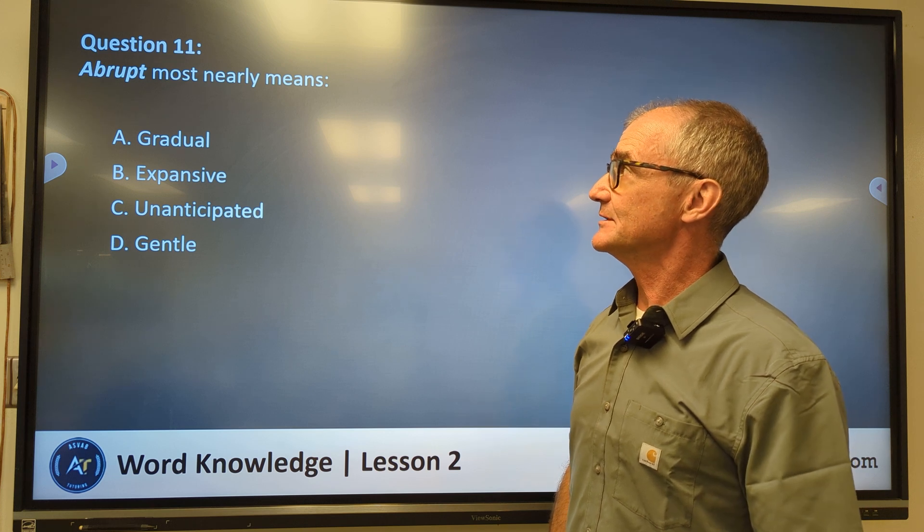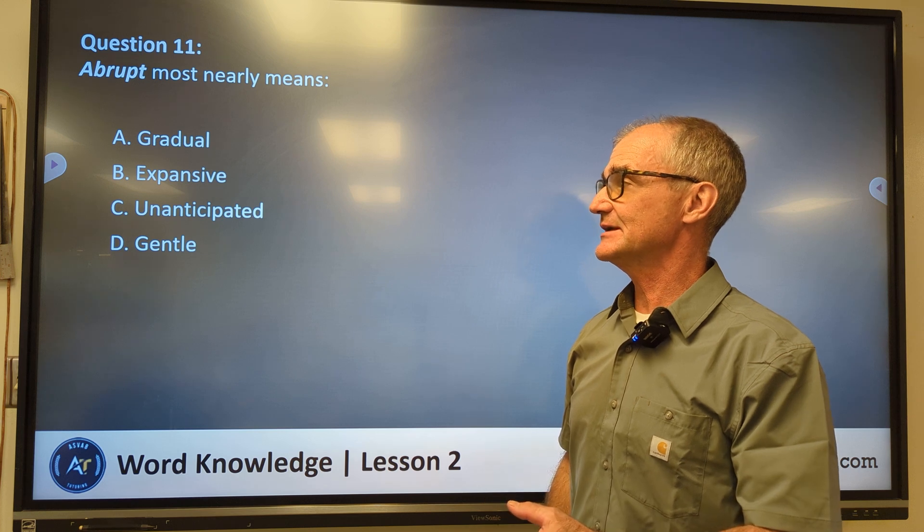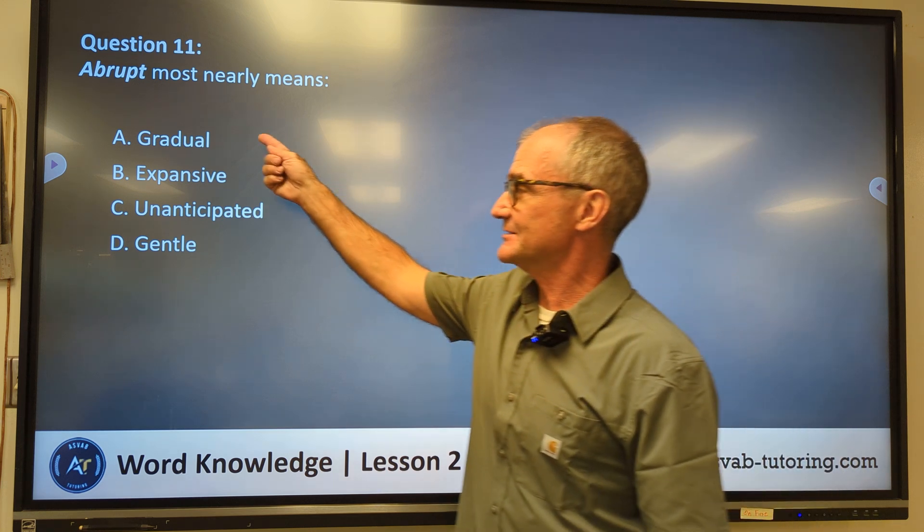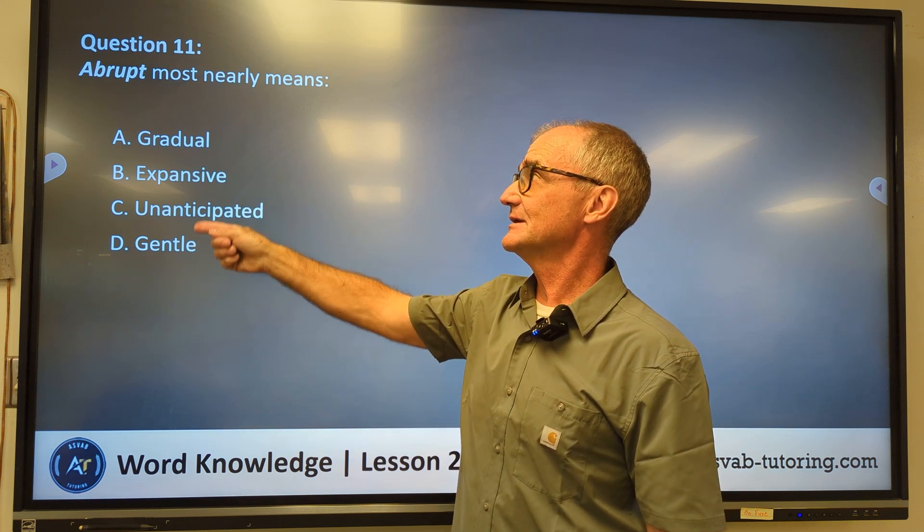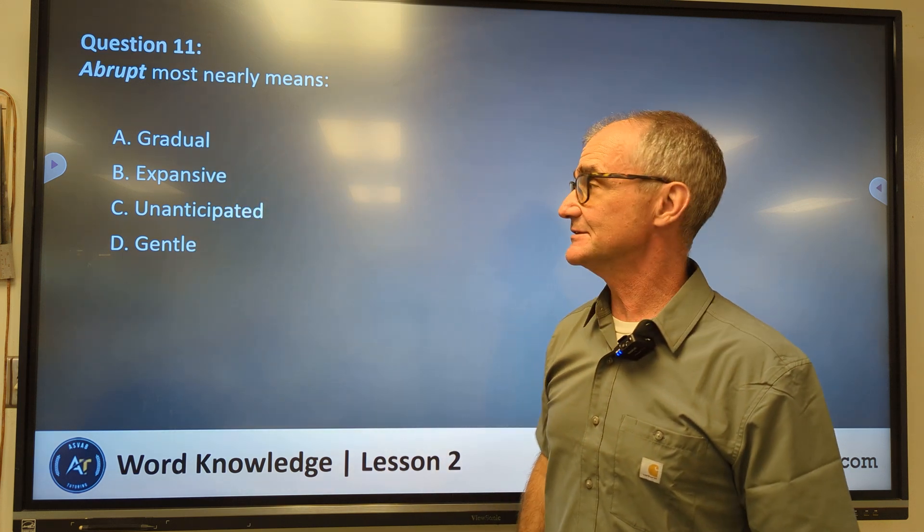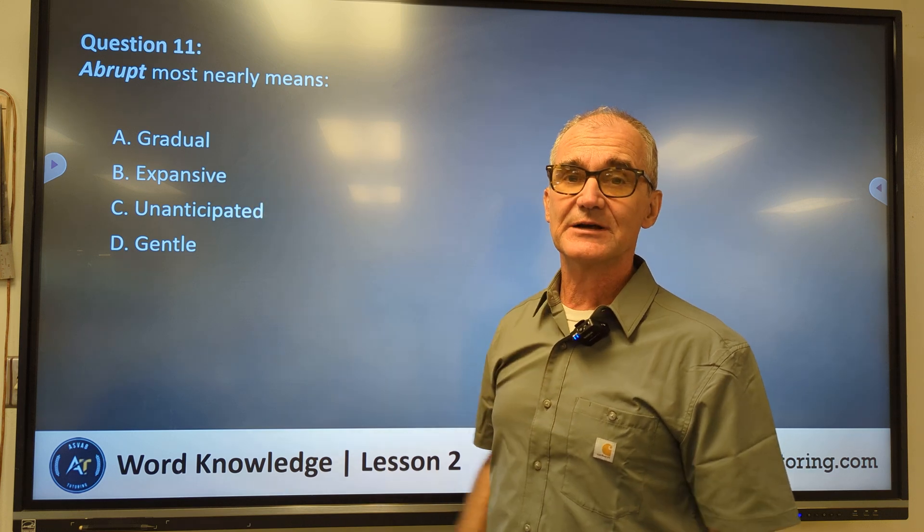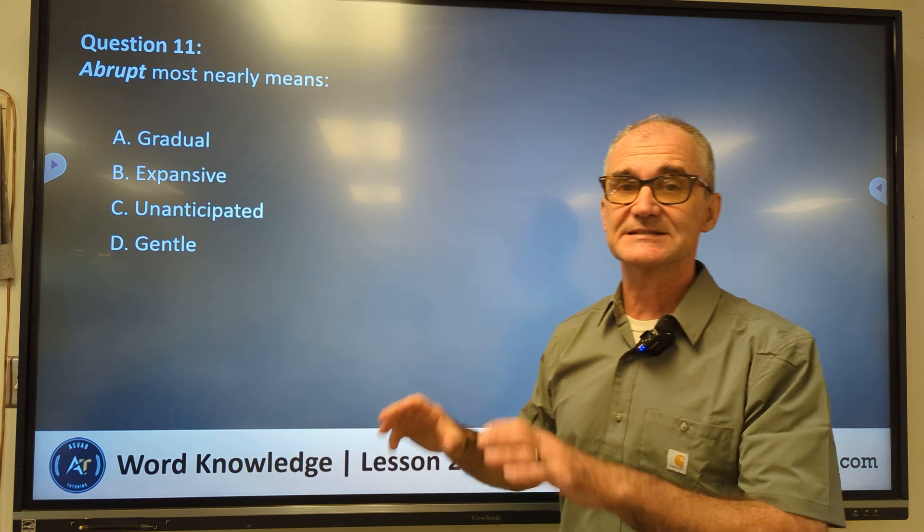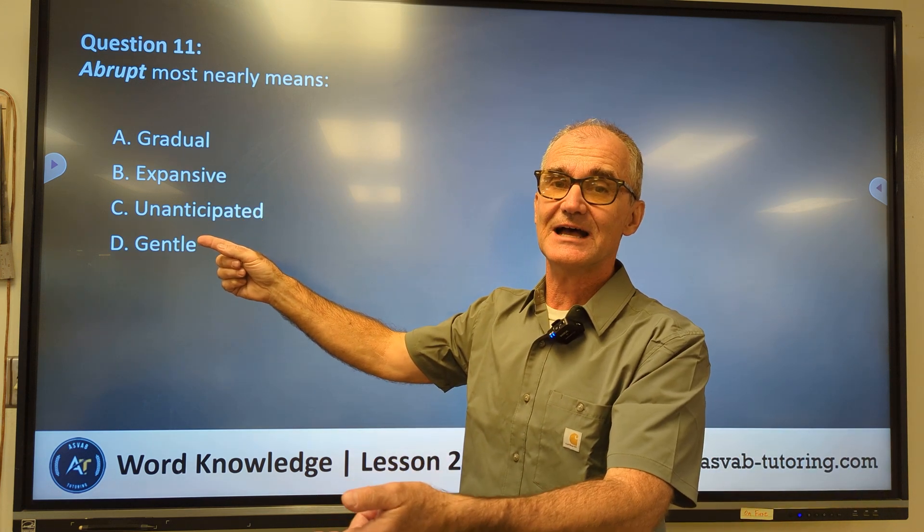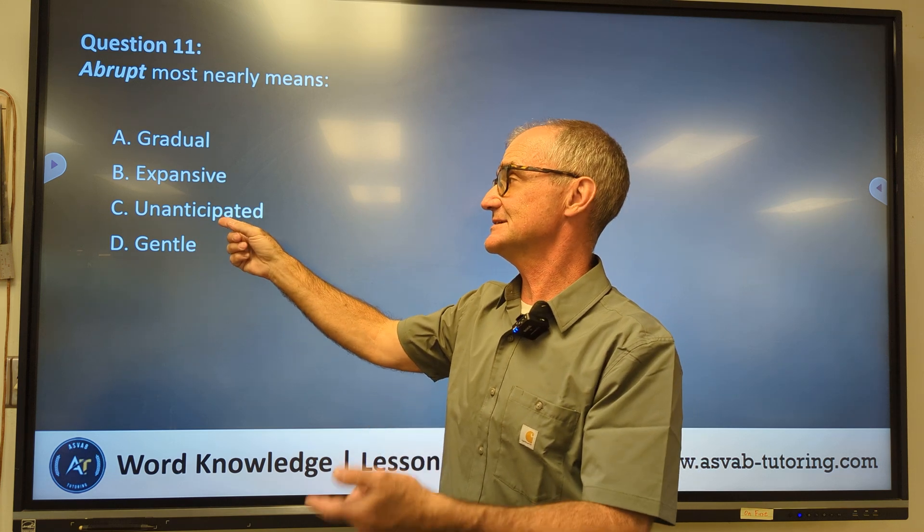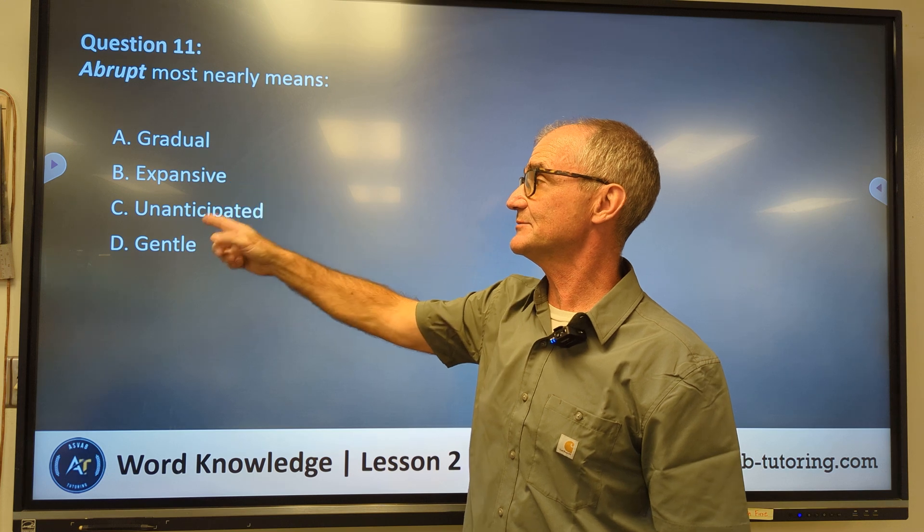Number eleven, abrupt, most nearly means gradual, expansive, unanticipated, gentle. So gradual and gentle are pretty similar. So because they're kind of the same, it's going to not be a solution. So expansive and unanticipated are different. Abrupt, come to an abrupt stop. Well, that's going to be a sudden stop. That is going to happen when you are not anticipating what's going to happen. So it'll be unanticipated stop would be an abrupt stop. Correct answer for abrupt, C, unanticipated.